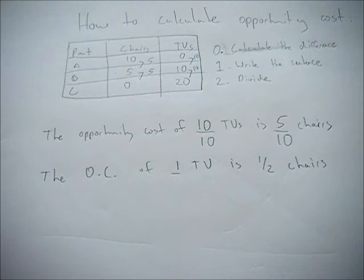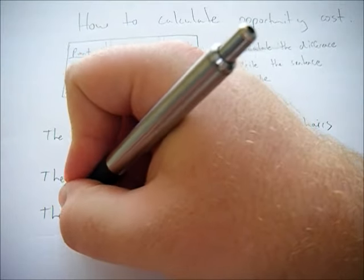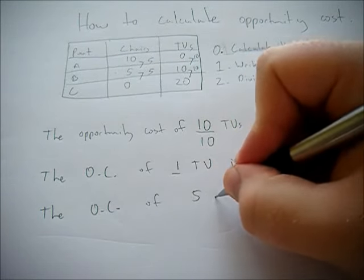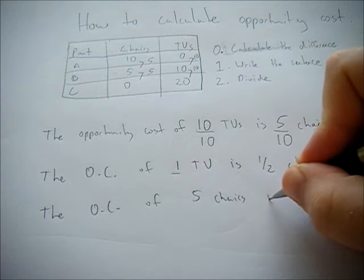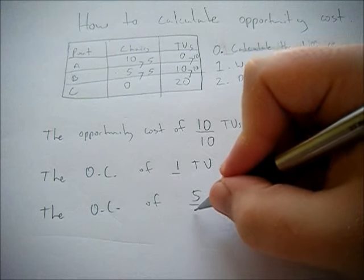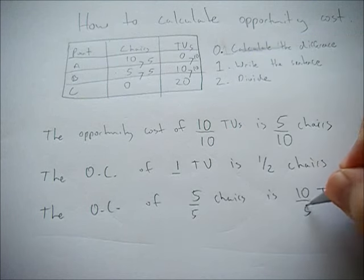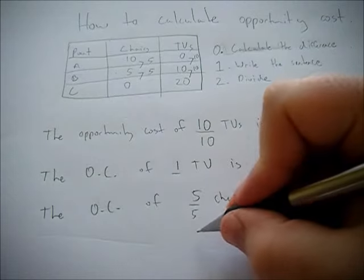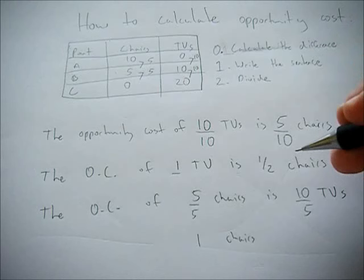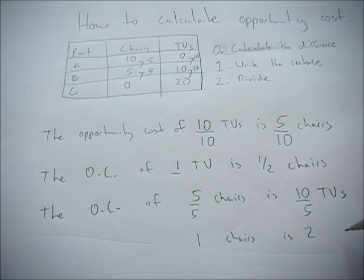If you wanted to do it the other way, you could. The opportunity cost of 5 chairs is 10 TVs. Then divide both sides by 5 to get the opportunity cost of 1 chair. The opportunity cost of 1 chair is 2 TVs. By writing this sentence and going through the procedure each time, you shouldn't be able to mess it up.